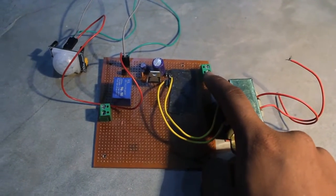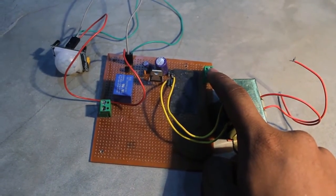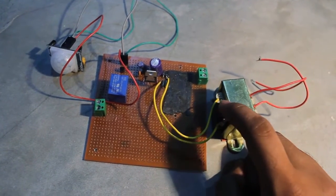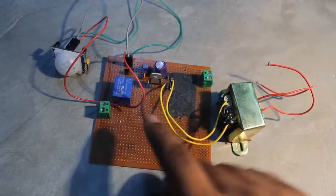I will be connecting this 230 volt mains to this terminal and it will be stepped down. This transformer will step down this voltage to 12 volt and this 12 volt will be rectified.